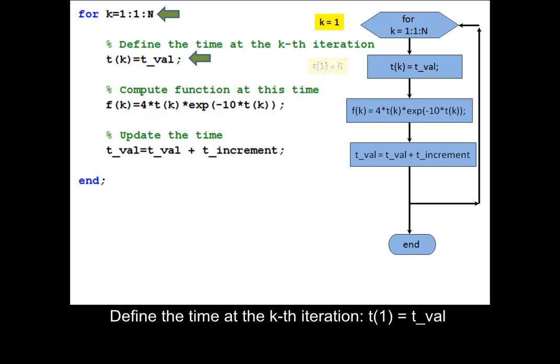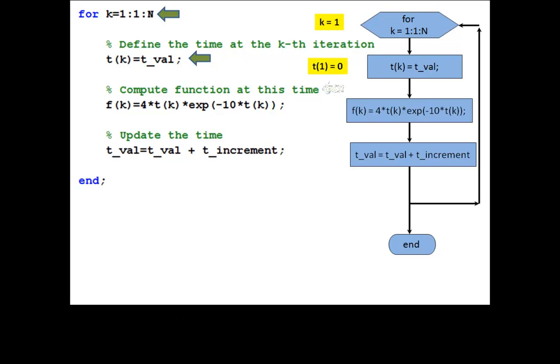Define the time at the k-th iteration: t of 1 equals dval. Compute the function f of 1 at time t of 1.